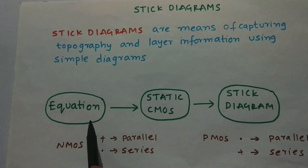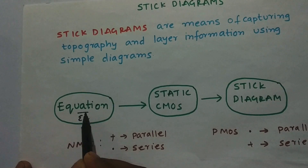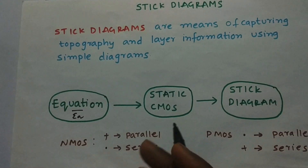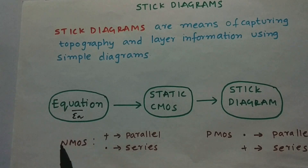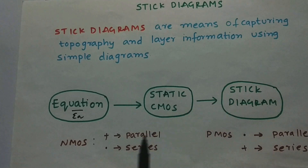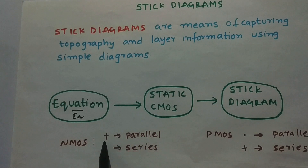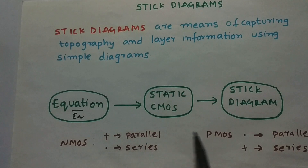Here is the flow of stick diagram design. First we write the equation, which should always be in complementary form — with a bar over it — because static CMOS gives a complementary output. Then from the equation, we draw the static CMOS diagram. In CMOS we have two networks: pull-up (PMOS) and pull-down (NMOS). NMOS is in parallel when the equation has a plus, and in series when it's a product. PMOS is the opposite: product is parallel and plus is series.